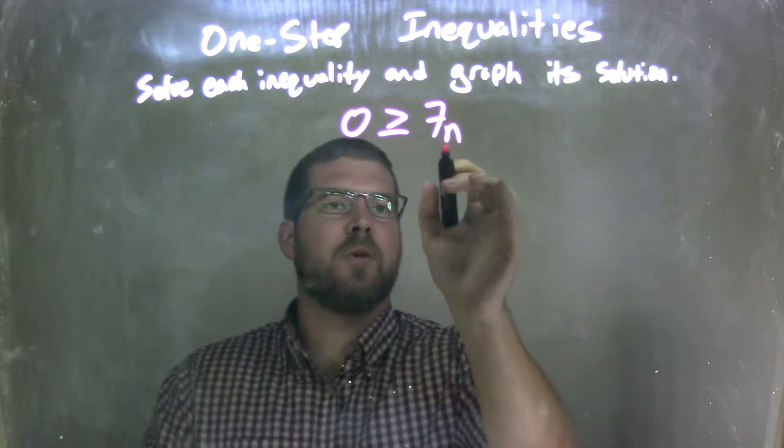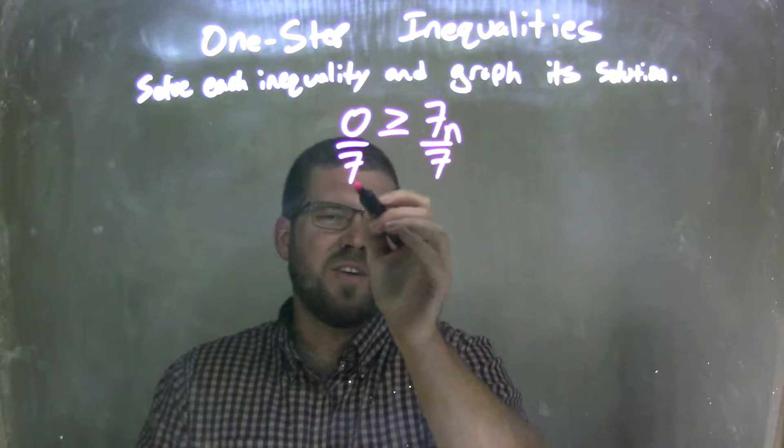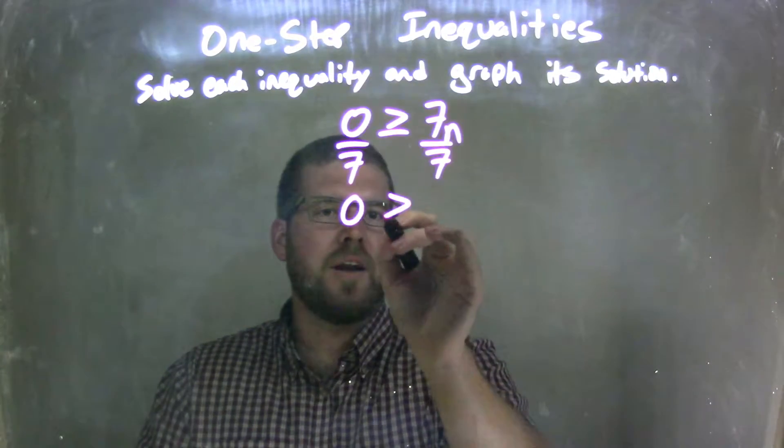So I want to get n by itself, so I need to divide by 7 to both sides, and that leaves me, well, 0 divided by 7 is 0, so 0 is greater than or equal to n.